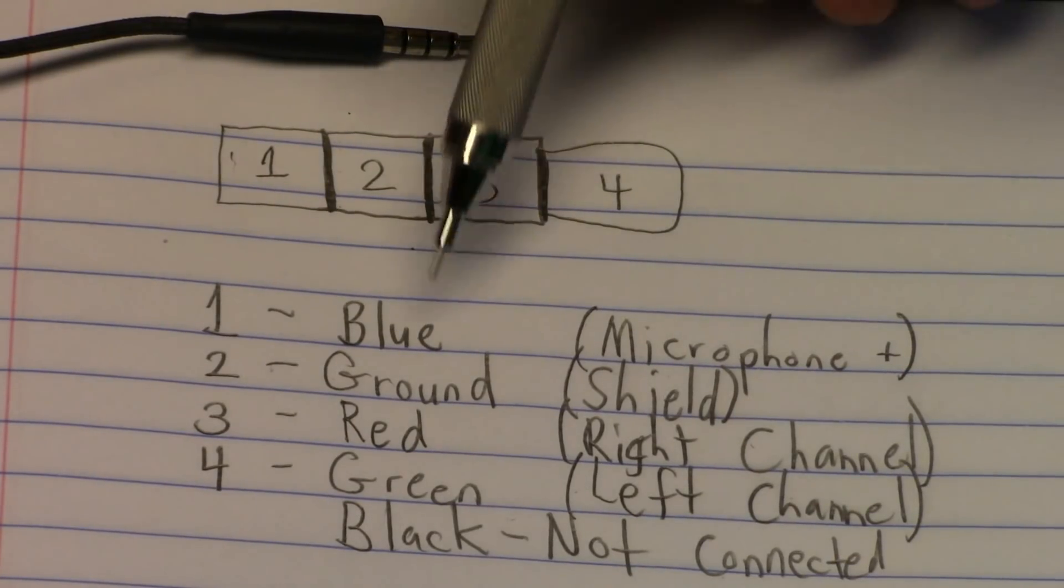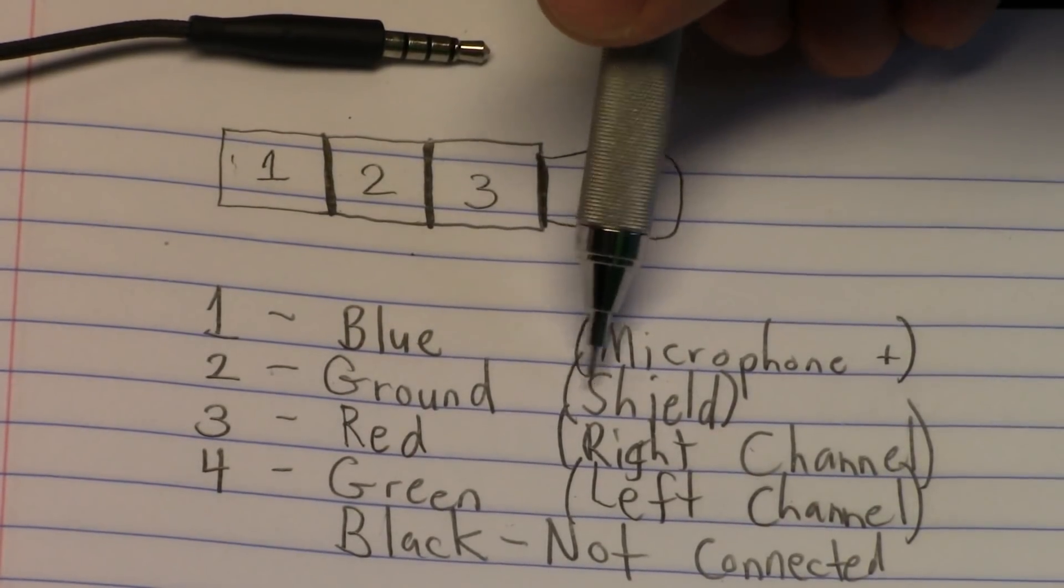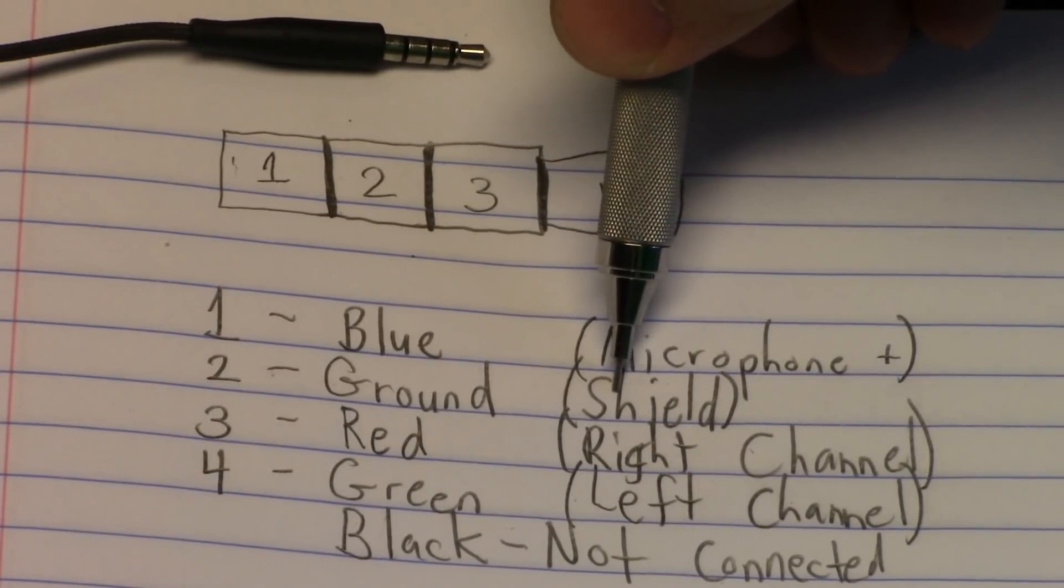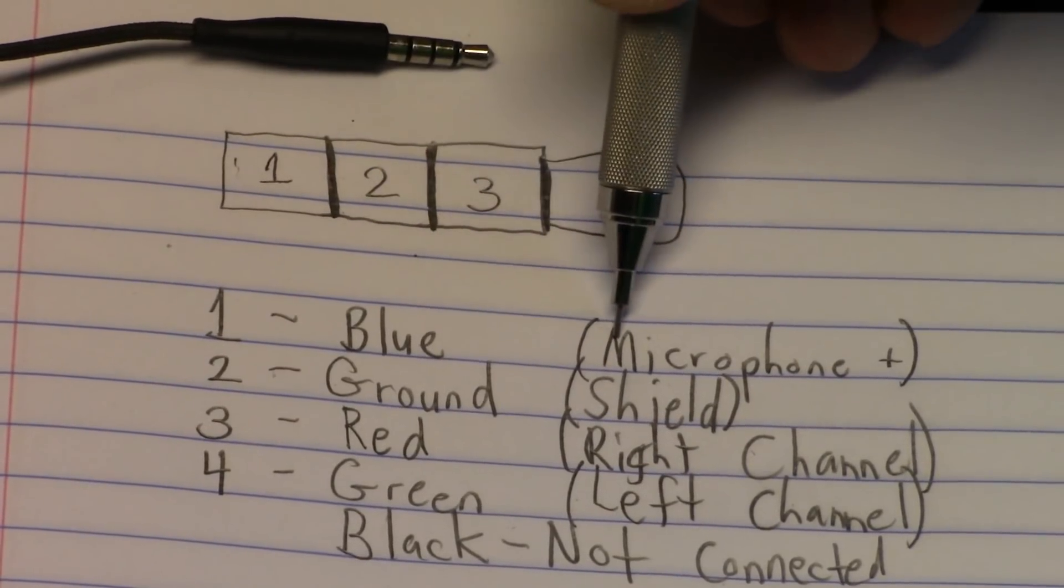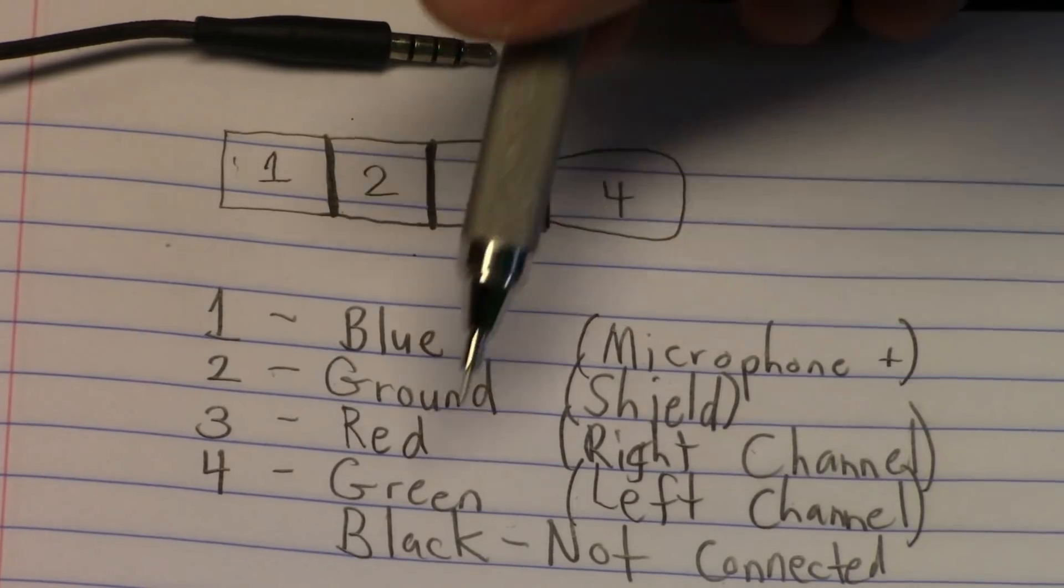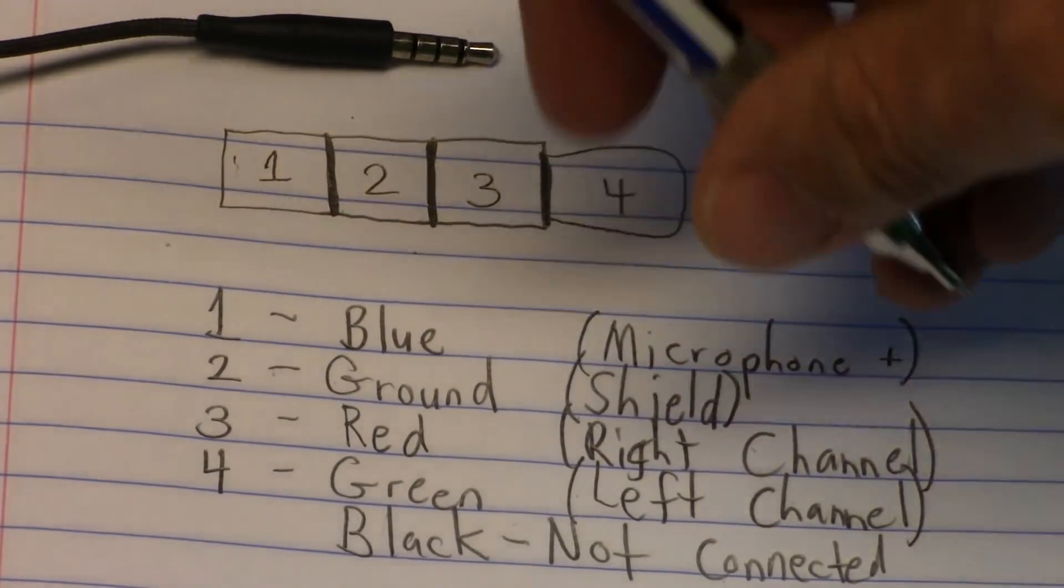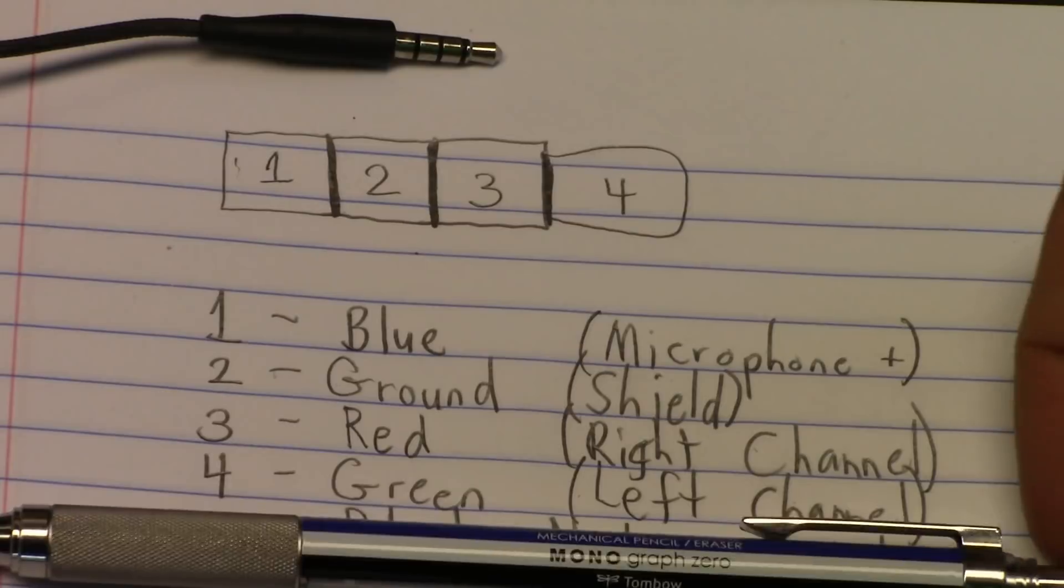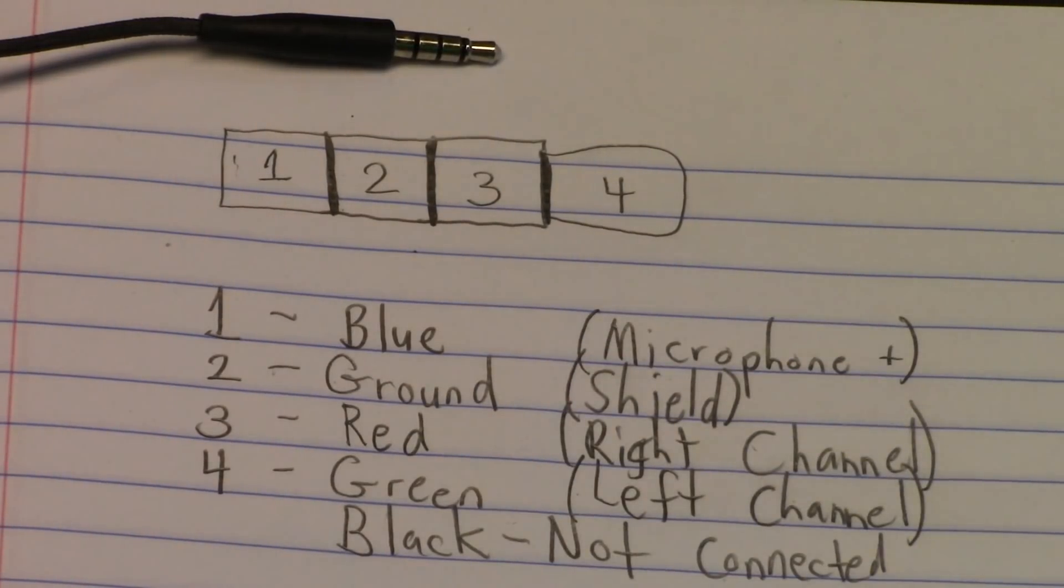What we're interested in is the ground, which is the shield, the exposed wire, the blue, which is the microphone, and the green, which is the left channel. By hooking up these connections, we should be able to make it work with an old telephone handset.